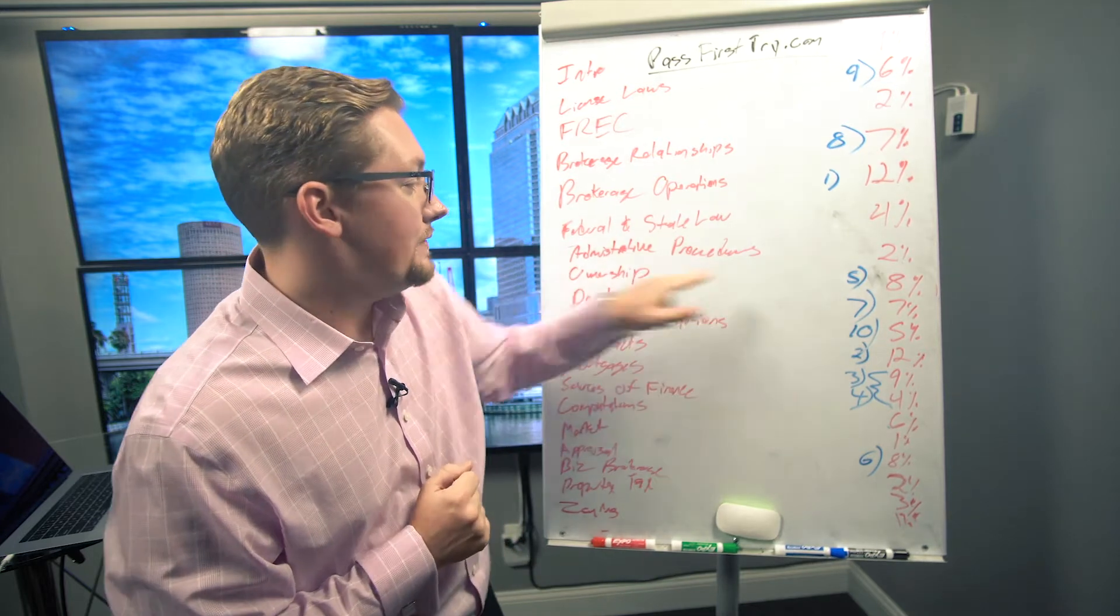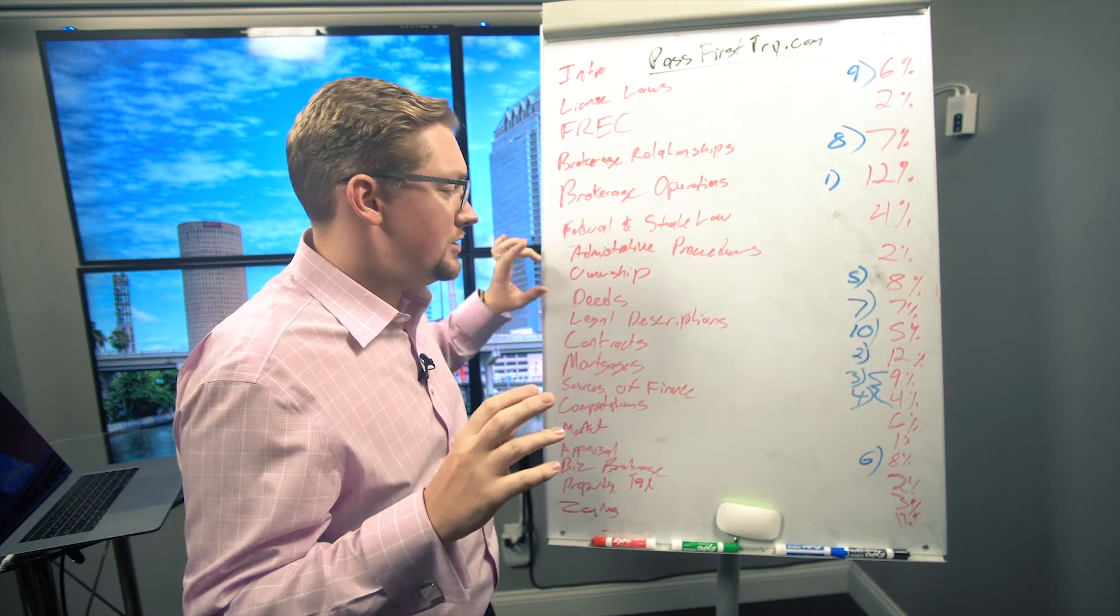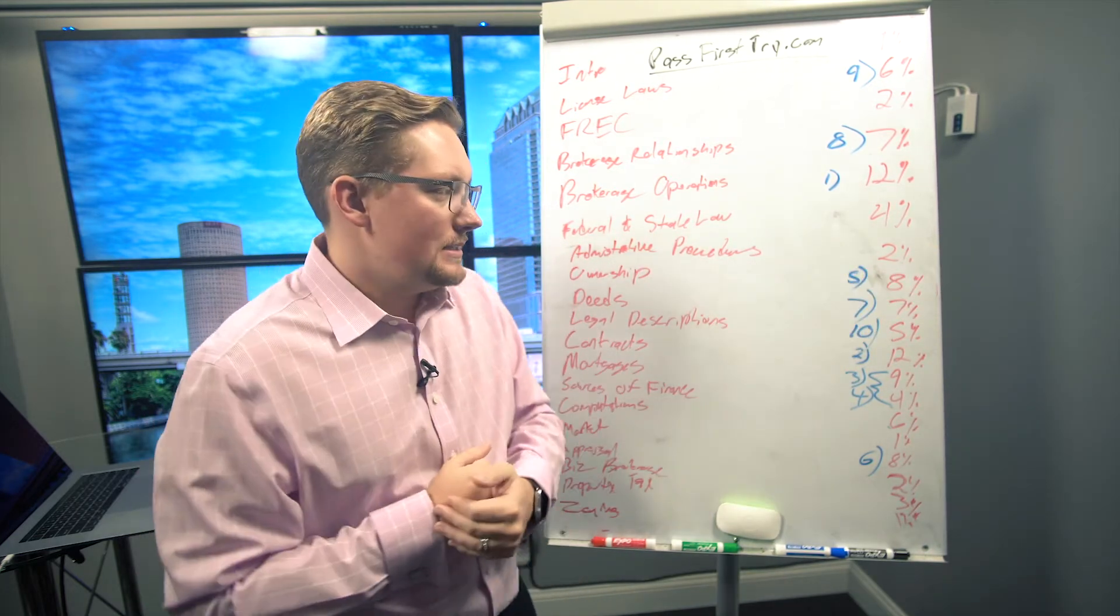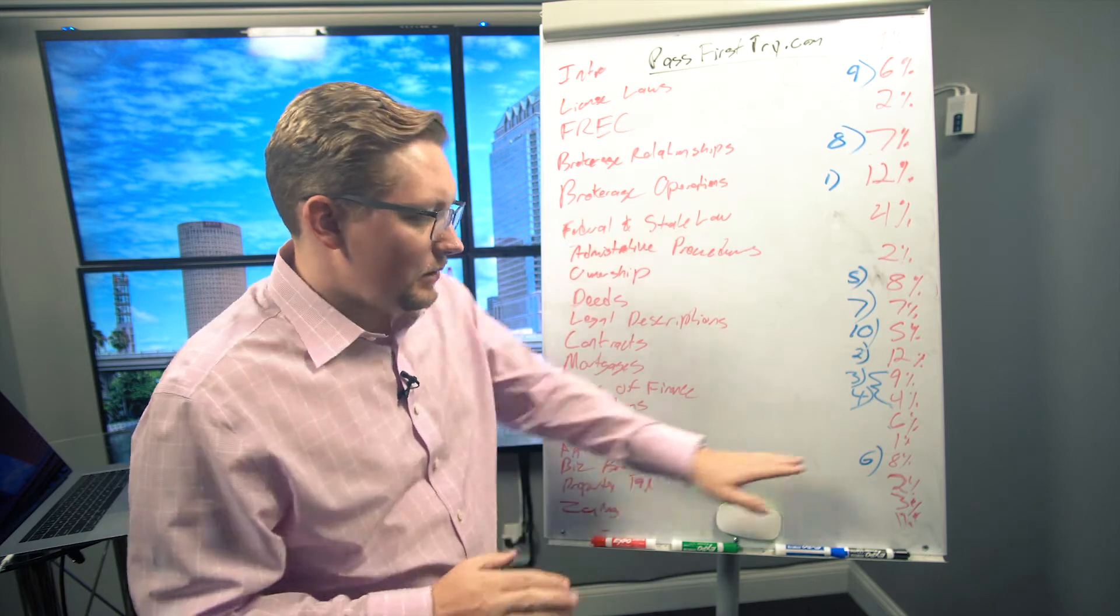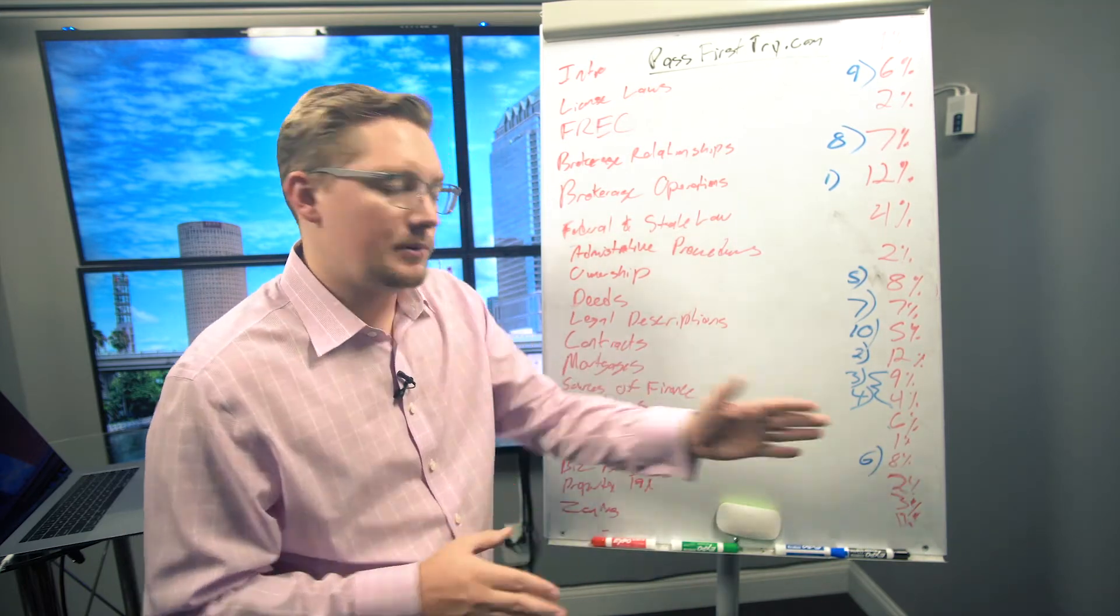Number five we've got Ownership. I've seen a lot of students struggle with these two chapters in particular - Ownership and Deeds - that's why we've got this one listed as number five. Then to break things up a little bit we'll jump over here to this Appraisal chapter which is also an 8% chapter, put that on your list as number six.